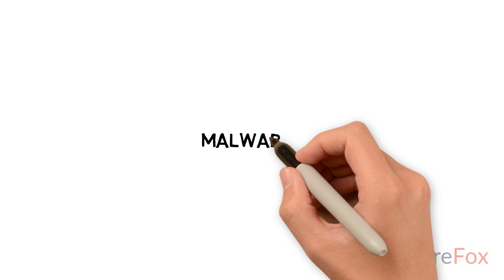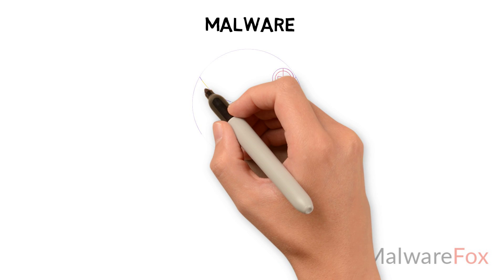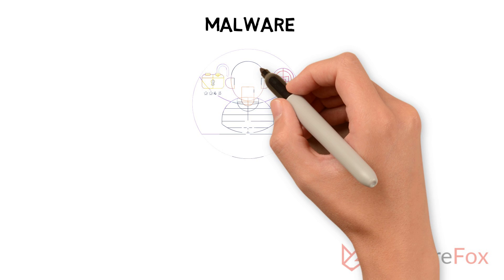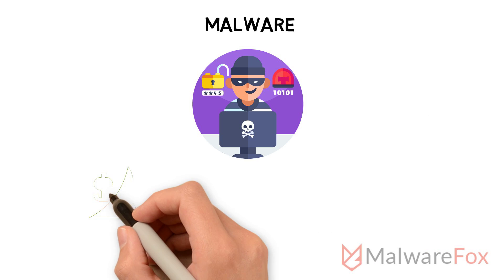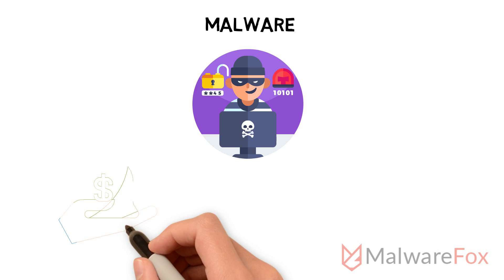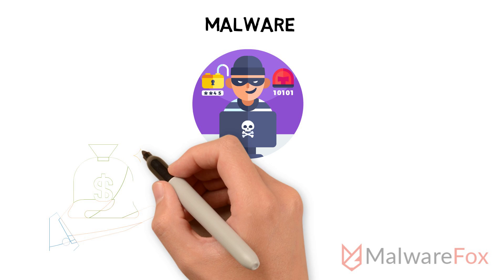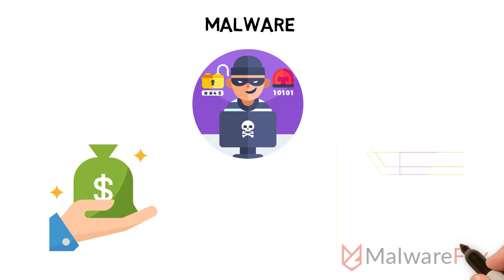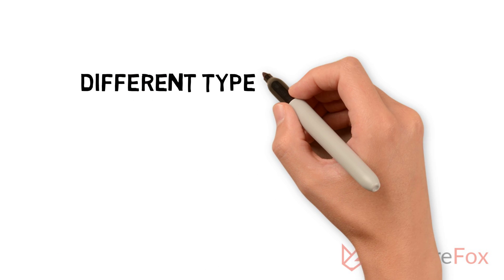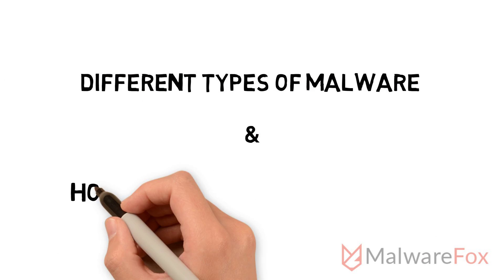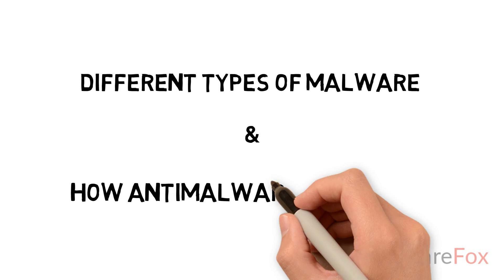Malware stands for malicious software. It is created by cyber criminals to harm the user's computer. Some malware are created to gain financial benefit, while others are to destroy data. In this video you will know about different types of malware and how anti-malware stops them.